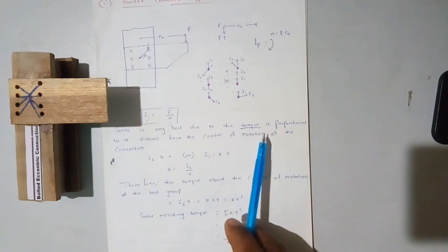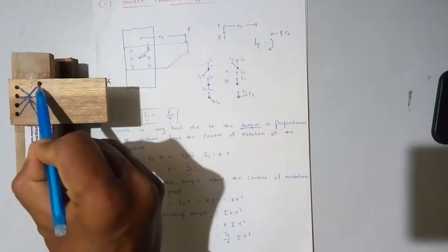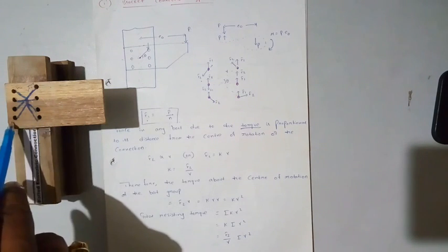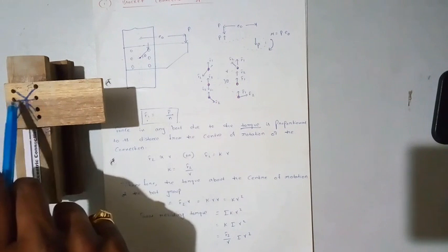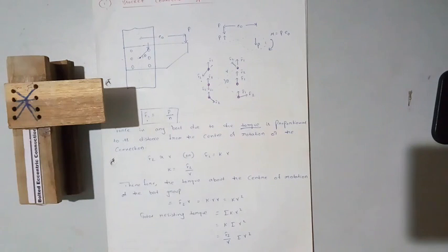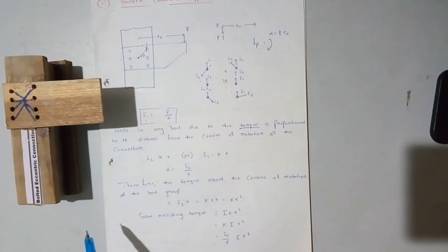Next, the twisting force — the force in any bolt due to torque is proportional to its radial distance. This is called radial distance. Every bolt will have a radial distance. If you see all these bolts, which bolt will have a maximum radial distance? The far bolt from the center of the bolt group. These four bolts will have a maximum radial distance; next to that, these bolts will have the next radial distances. Therefore, F2 will be directly proportional to radial distance — as distance increases, the force acting on that particular bolt will be more. So F2 is directly proportional to r. Therefore, the torque about the center of rotation of the bolt group is calculated like this.